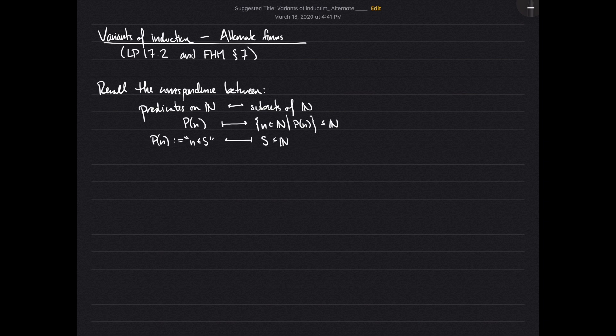These two assignments — going forward and going backward — are actually inverses of each other. They form a bijection between predicates on N and subsets of N, telling us that predicates on N and subsets of N are just two sides of the same coin; they're just two ways to think about the same thing.